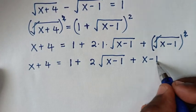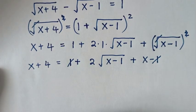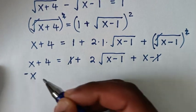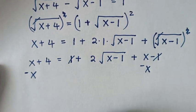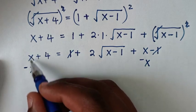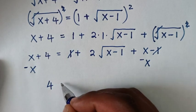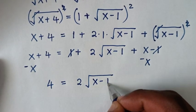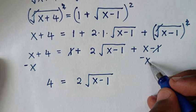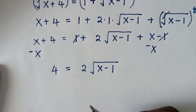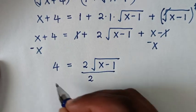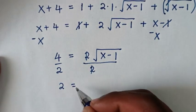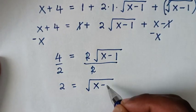From here, 1 minus 1 is 0. We also have x on both sides, so subtracting x from both sides gives x minus x equals 0. This simplifies to 4 equals 2 times square root of (x minus 1). Dividing both sides by 2, this gives 2 equals square root of (x minus 1).